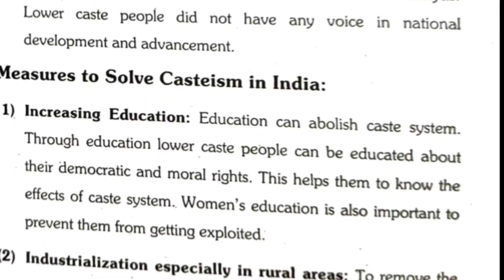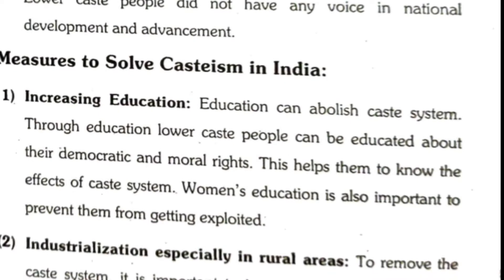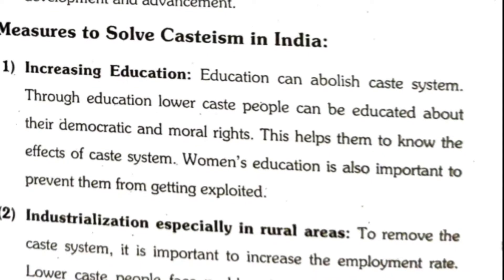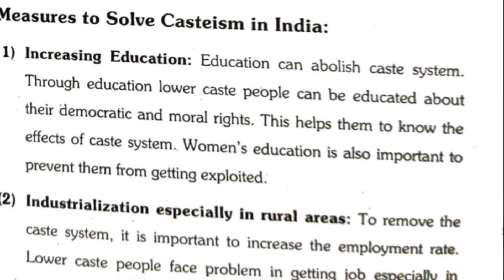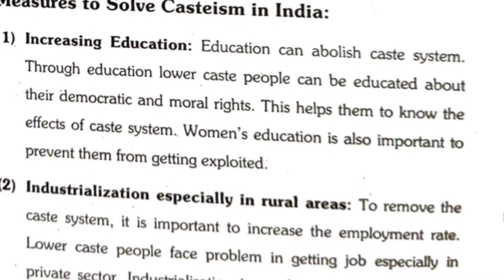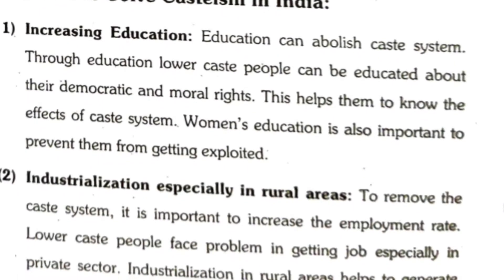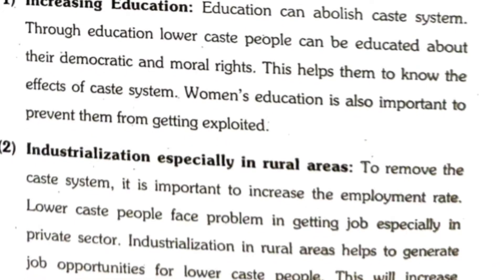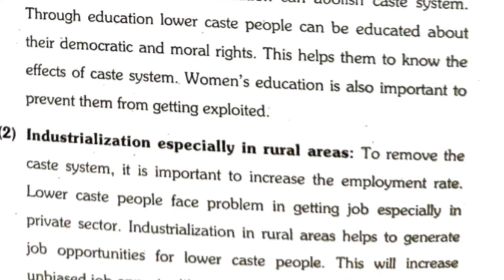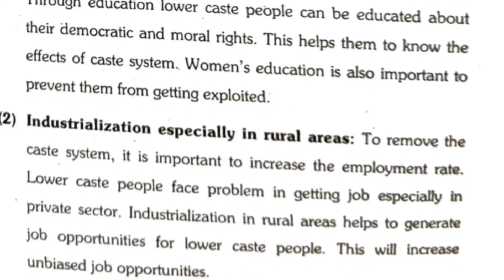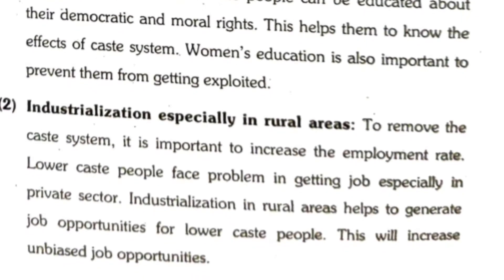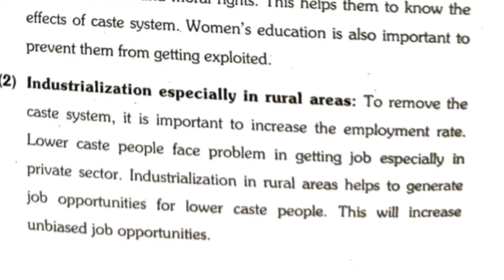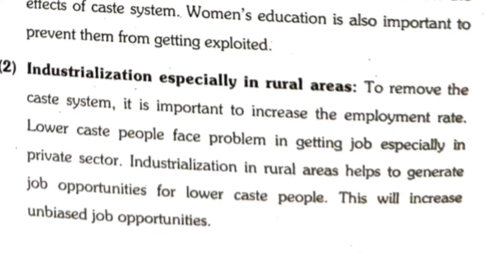Measures to solve casteism in India. First, increasing education. Education can abolish caste system. Through education, lower caste people can be educated about their democratic and moral rights, helping them to know the effects of caste system. Women's education is also important to prevent them from getting exploited. Second, industrialization, especially in rural areas. To remove the caste system, it is important to increase the employment rate. Lower caste people face problems in getting jobs, especially in the private sector. Industrialization in rural areas helps generate job opportunities for lower caste people.